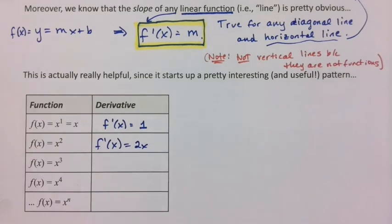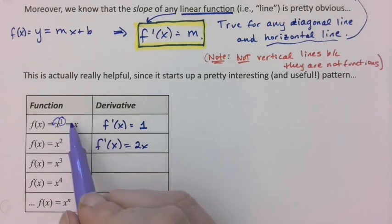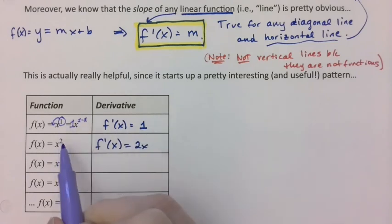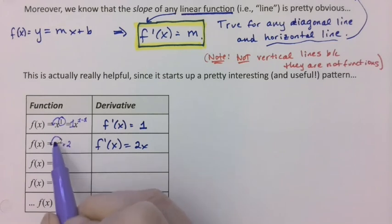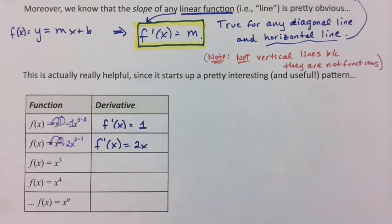So this would be f prime of x is equal to 2x. And you can see you're starting to develop a pattern here. The way to get this is to take the 1, bring it down in front, it becomes 1x to the 1 take away 1, 1 take away 1 is 0, so it becomes 1x to the 0, which is 1. This is 2, bring the 2 down in front, and then x to the 2 take away 1, 2 take away 1 is 1. There's a power of 1 right there.